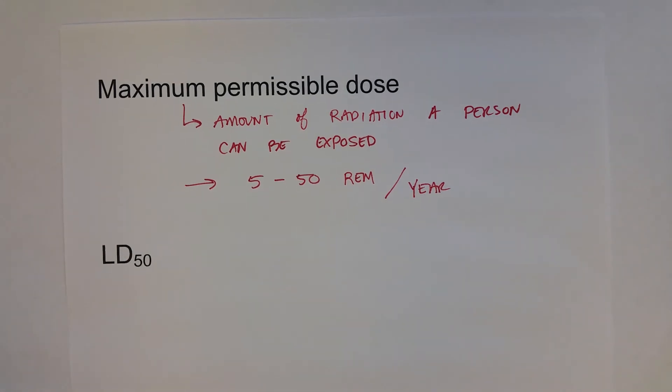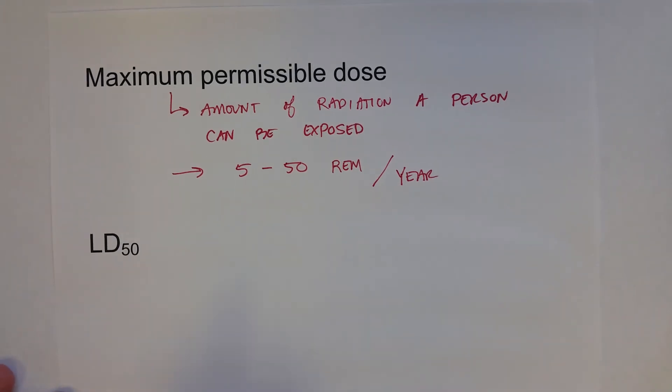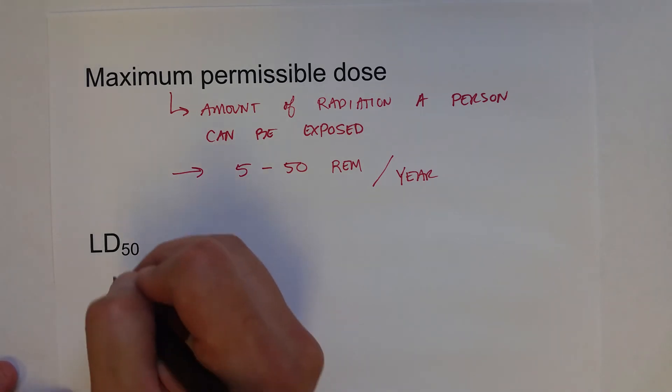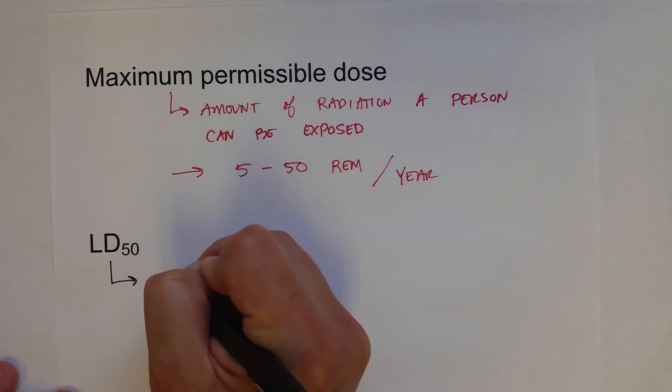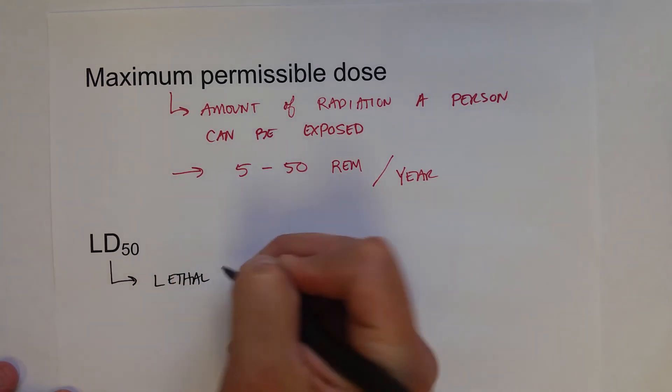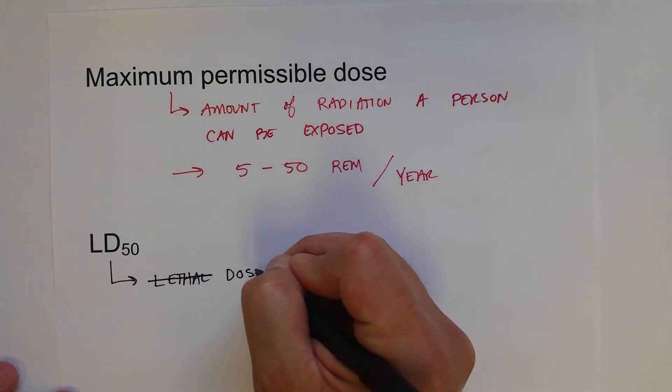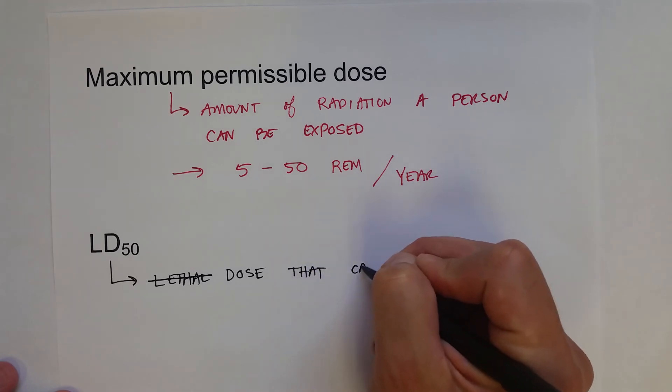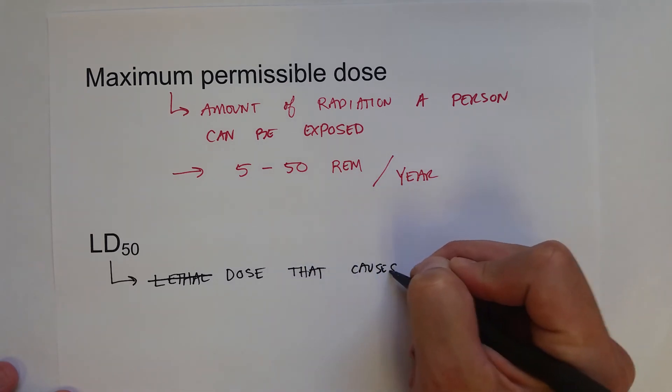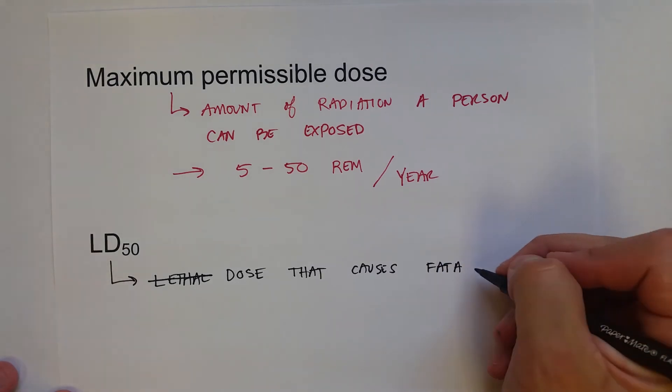And then another important measure of radioactive or any type of toxicological substance that can be harmful is the LD50. This is the lethal dose - the dose that causes fatalities in 50% of the population.